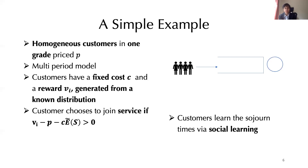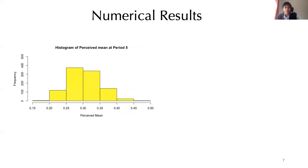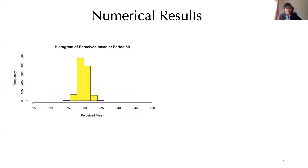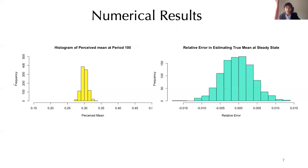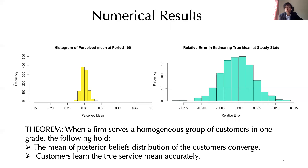Do the customers reach a consensus in terms of their beliefs? In this graph, the x-axis plots the perceived mean of customers and the y-axis plots the frequency of customers with perceived means in a certain range. At period 5, the histogram of beliefs is fairly spread out. At period 50, it's more concentrated. At period 100, it basically coalesces around the same region — so customers of a type do reach a consensus on service quality. Furthermore, plotting the relative error — the difference between the true service quality and the perceived service quality at steady state — we see it is concentrated around zero, confirming that customers do learn the true service time means.